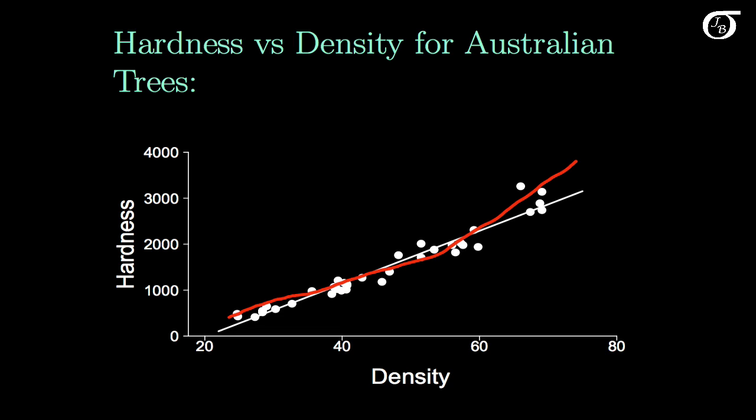Perhaps that straight line relationship was a reasonable one to begin with, but the residual plot told us that it's not perfect, and that we can probably improve upon it.